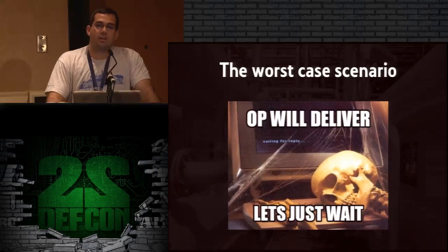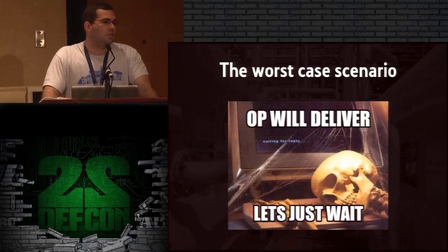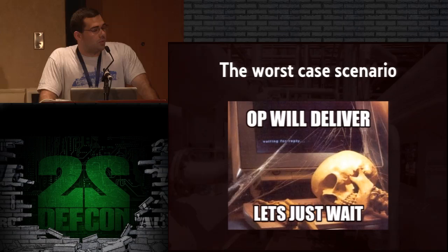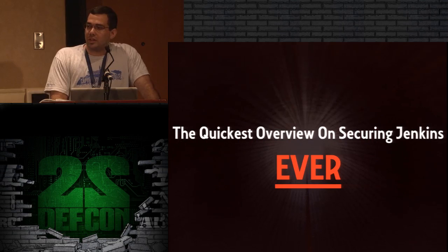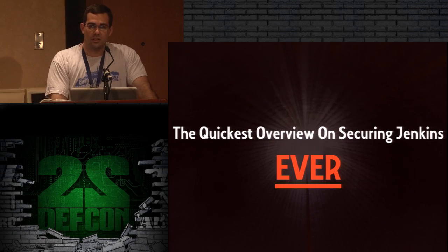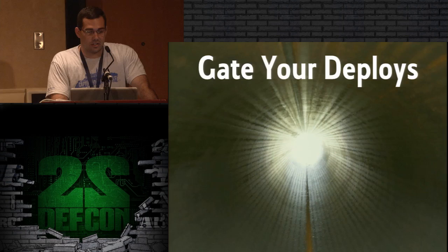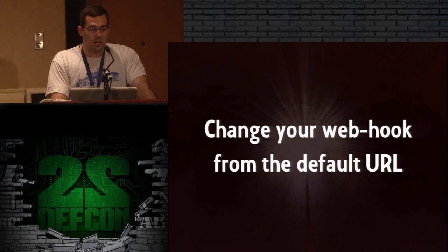The worst case scenario is if there's no CI, no deployment system — just a repository you want to compromise. Sneak in your code, hope no one sees it, and it might propagate. For a quick overview on securing your Jenkins server: disable anonymous access, take code review seriously, gate your deploys, use a random port for slave communications, disable executors on master, and change your webhook from the default URL.